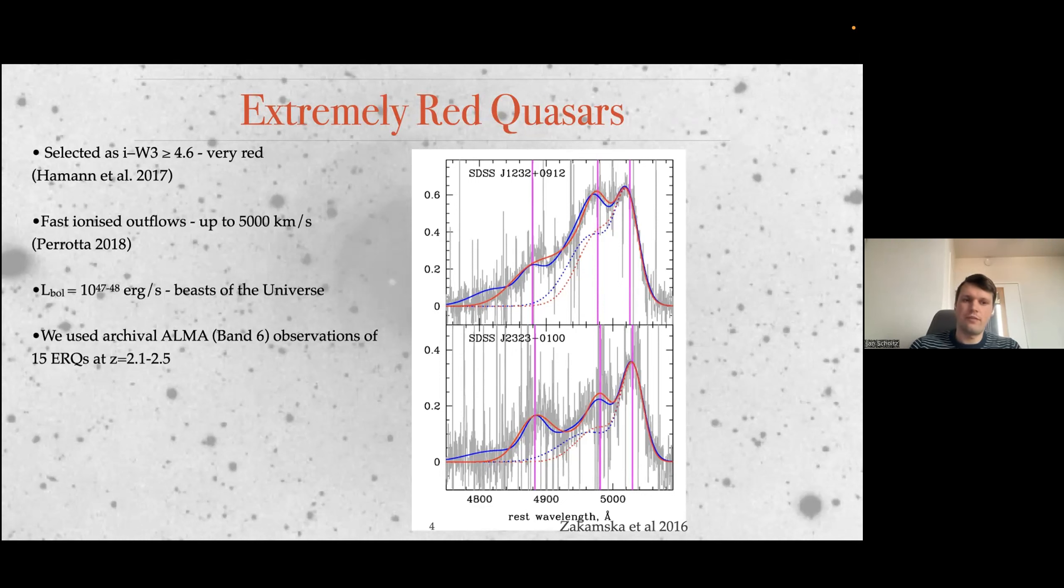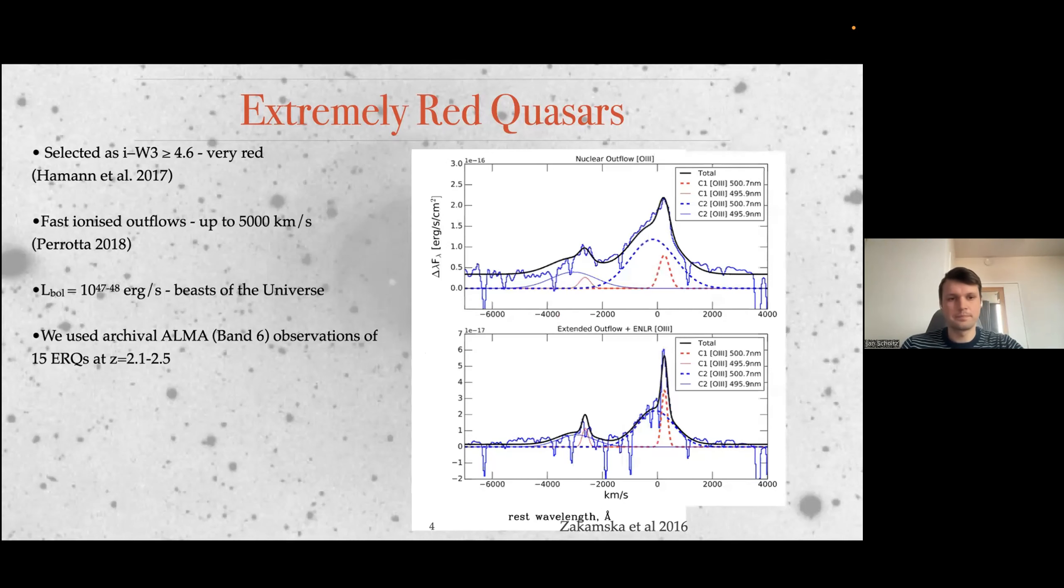Some people say that the reason why they have such a powerful outflow is not because they are special, it's because they are so luminous, and there is a correlation between the outflow luminosity and the luminosity of the quasar. We used a sample of 15 ERQs selected at 2.1 to 2.5 in Band 6, ALMA observations. The reason we decided to look at these 15 is we realized that they were public in the archive for four years and nobody would write a paper on them.